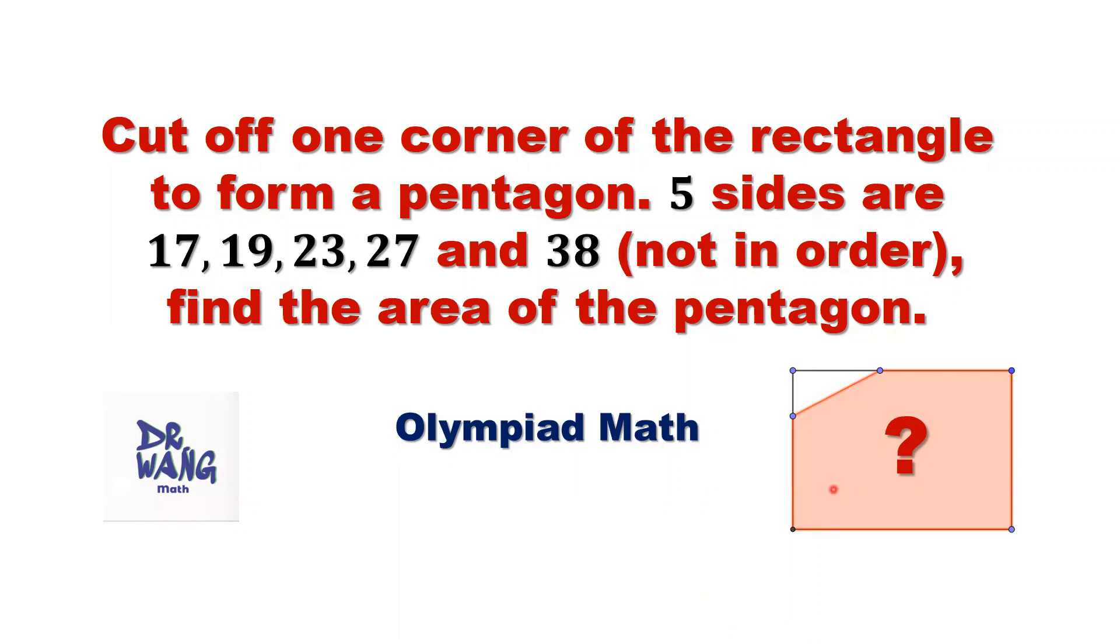This is a rectangle cut off one corner to form a pentagon. Five sides of the pentagon are given, but not in order. We don't know which one is which. The question is, can you find the area of this pentagon?